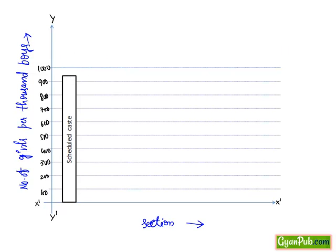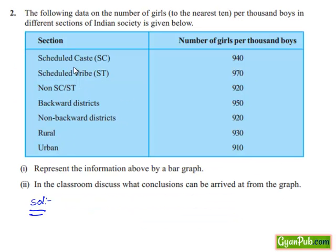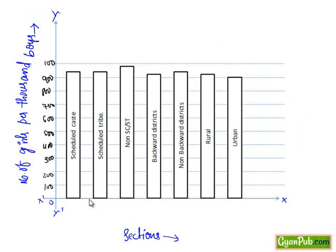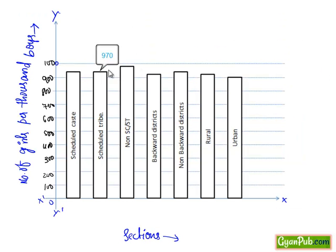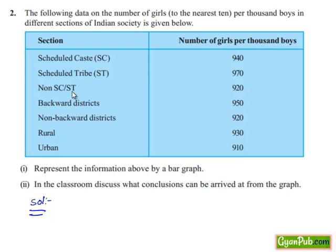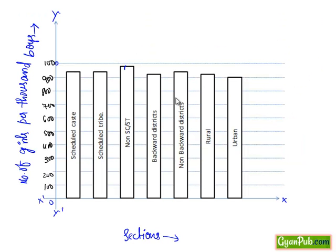If we mark the other sections also, we get the full graph. Here, SC which is 940 is between 900 and 1000, and ST which is 970 is nearest to 1000. Non-SC/ST, backward districts, non-backward districts, rural, and urban were drawn as follows.